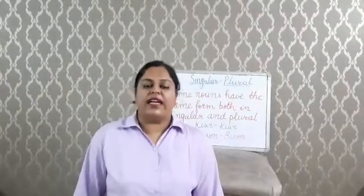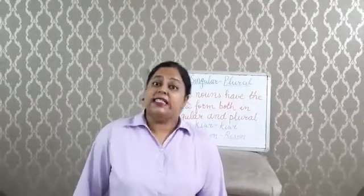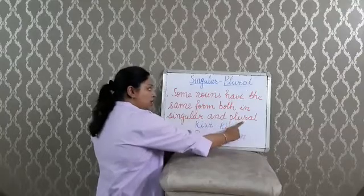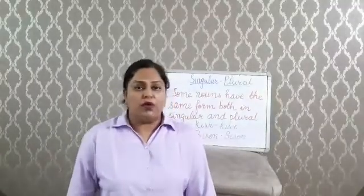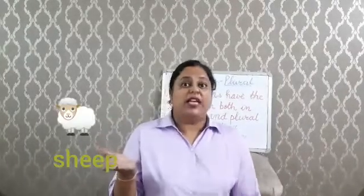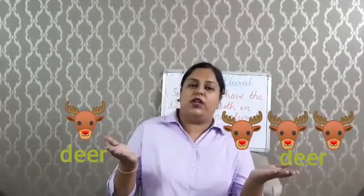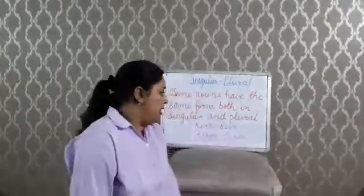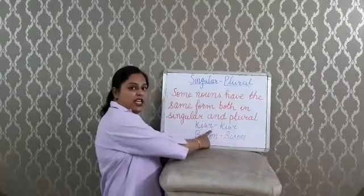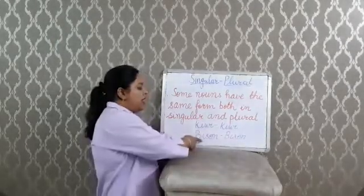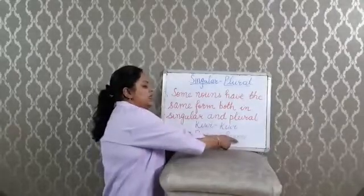Now let's understand one more fact: some nouns have the same form both in singular and plural. For example, sheep is used for both singular and plural. Deer is also the same for singular and plural. Similarly, kiwi is used for both singular and plural, and bison is the singular and plural form as well.